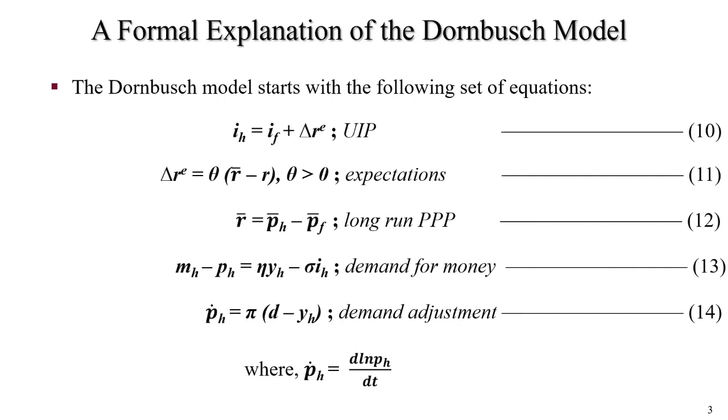Formal explanation of the Dornbusch model. The Dornbusch model starts with following equations. Equation 10 denotes domestic and foreign goods are perfect substitutes. IH equals IF plus delta RE. Here, IH equals domestic interest rate, IF equals foreign interest rate, and delta RE equals expected rate of depreciation in the value of the home currency relative to the foreign currency.